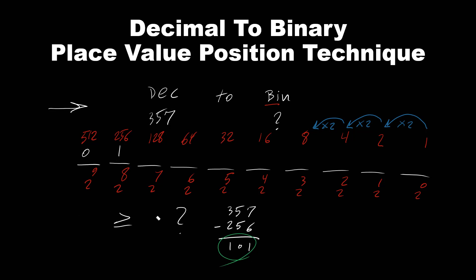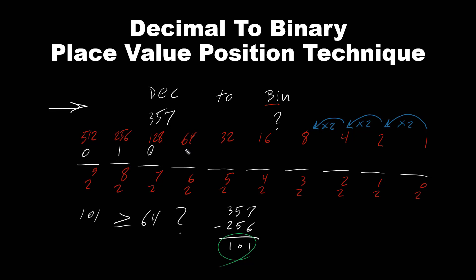Does 101 greater than or equal 128? Or if we subtract 101 minus 128 and get a negative value, we have to put 0. In this case, 101 is less than 128. So this is 0. What about 64? 101 is greater than 64. So this one is on. Now what is our new value? 101 minus 64 is 37. So this is our new value.